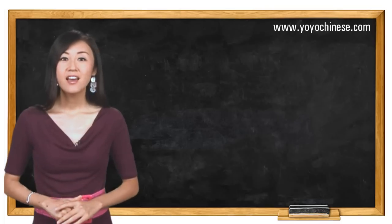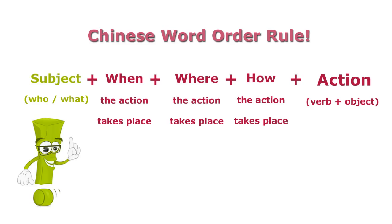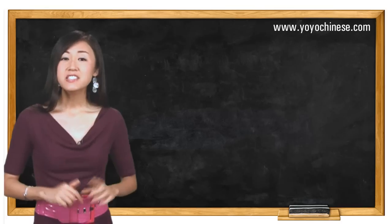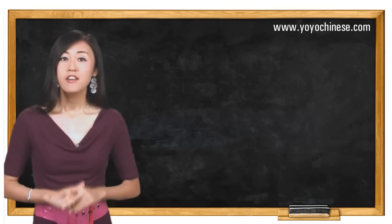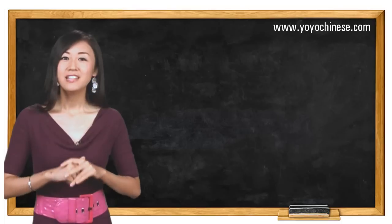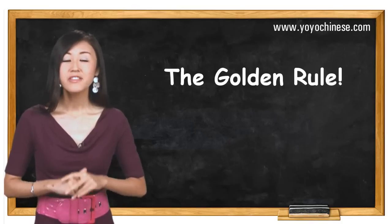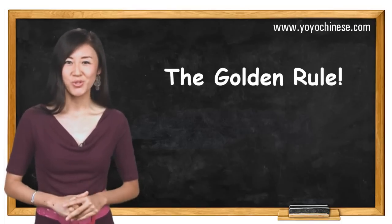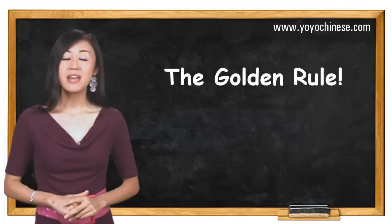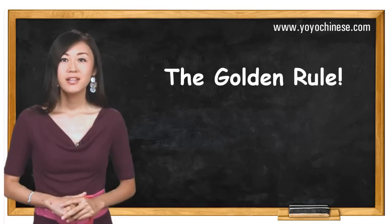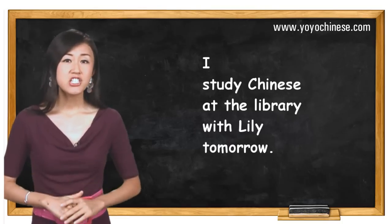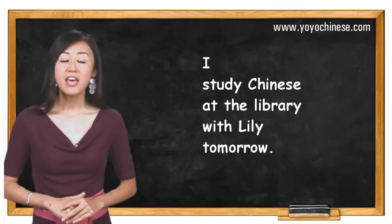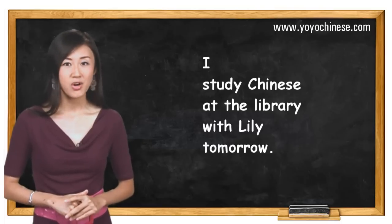Let me say it again. First, the subject, and then when, where, how, and then the action. Since this concept is so important, from now on, let's call this Chinese word order rule the golden rule. Let's learn this through an example: how do you say 'I study Chinese at the library with Lily tomorrow'?